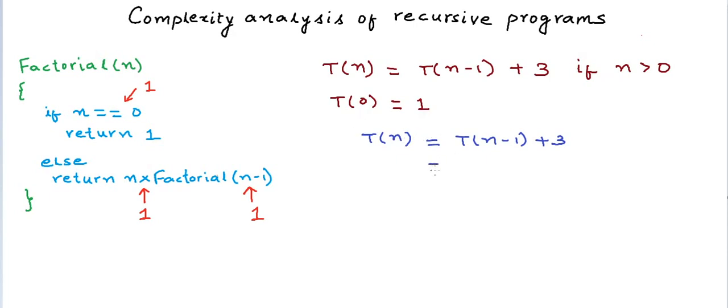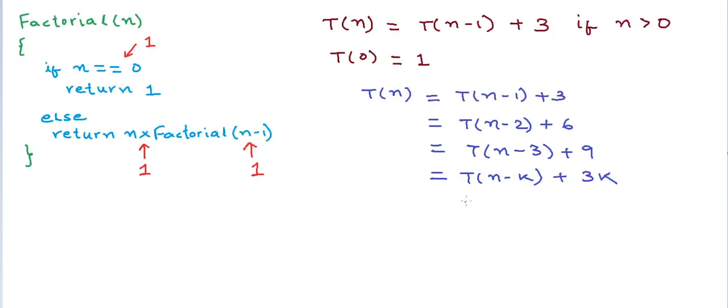Now T(n-1) can be written as T(n-2) + 3, so overall the expression will be T(n-2) + 6. This can be further reduced to T(n-3) + 9 because T(n-2) is nothing but T(n-3) + 3 + 3. So if I have to reduce this by a generic k, then this is equal to T(n-k) + 3k. Now we want to express this in terms of T(0), so in that case n minus k will be equal to 0, or k will be equal to n.